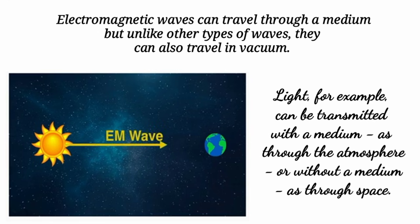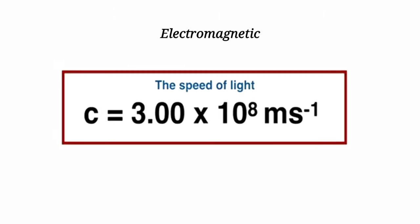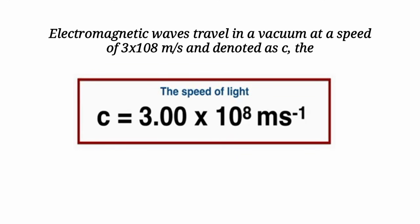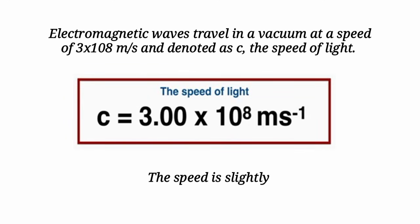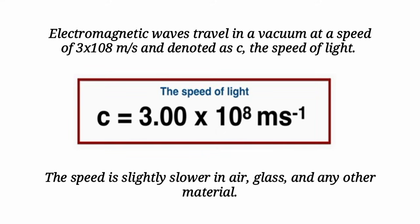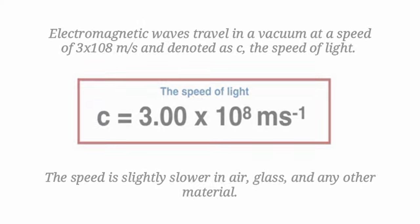Light, for example, can be transmitted with a medium such as through the atmosphere, or even without a medium as through space. Electromagnetic waves travel in a vacuum at a speed of 3 times 10 to the 8 meters per second, denoted as C, the speed of light. The speed is slightly slower in air, glass, and any other material.